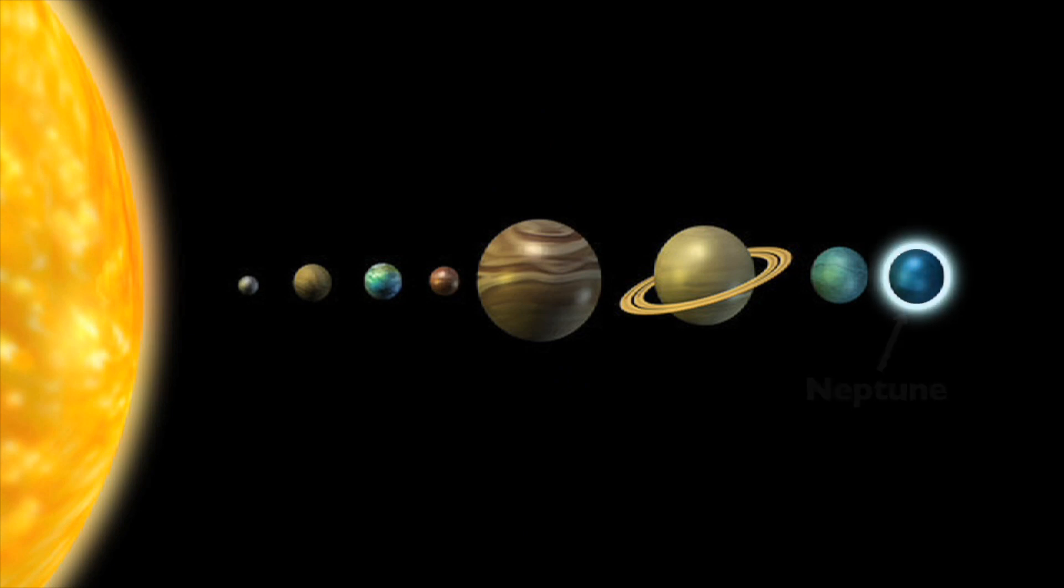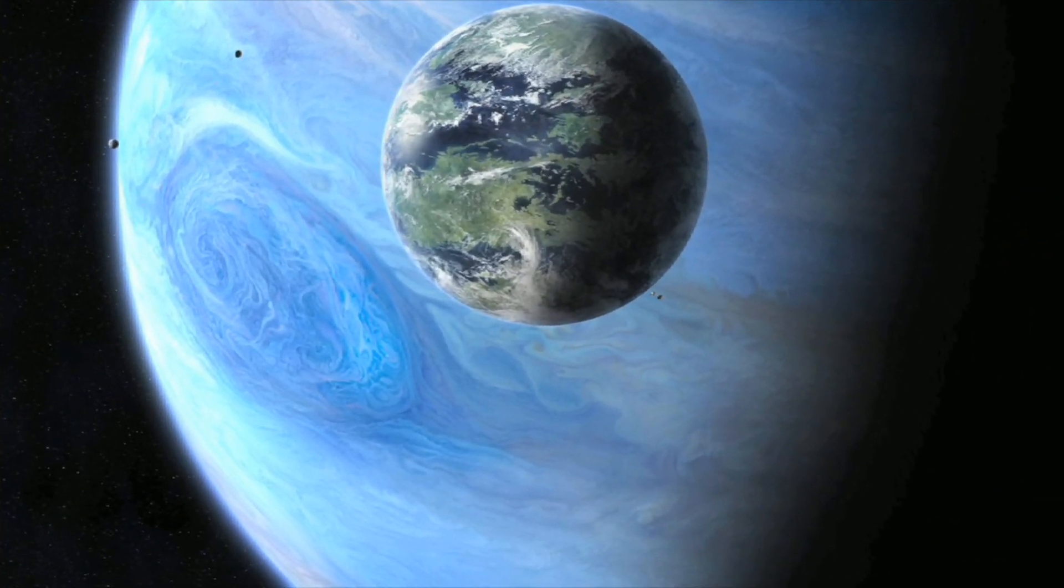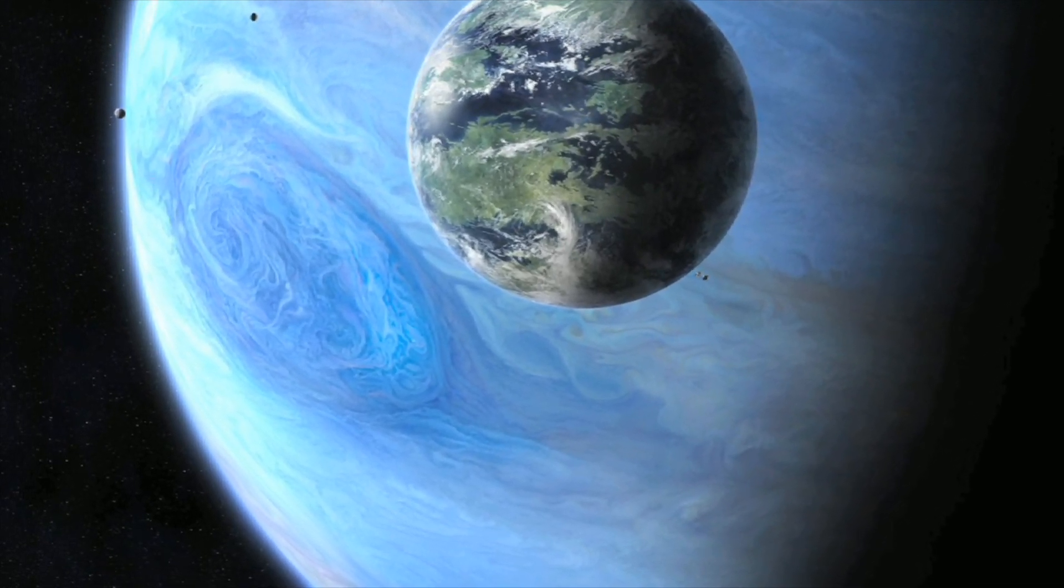Neptune is the farthest planet from the sun. Neptune is nearly four times the size of Earth and experiences the most violent weather in our solar system.